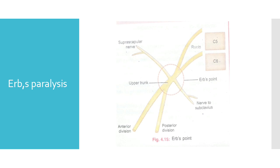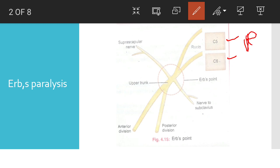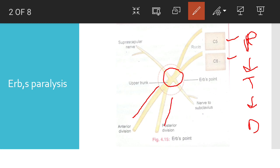We will see what Erb's point is. In this diagram, you will see that there are two roots: C5 and C6. We know that roots lead to trunks, and trunks lead to divisions — anterior and posterior divisions. Here, C5 and C6 roots combine to become the upper trunk, which then forms divisions.